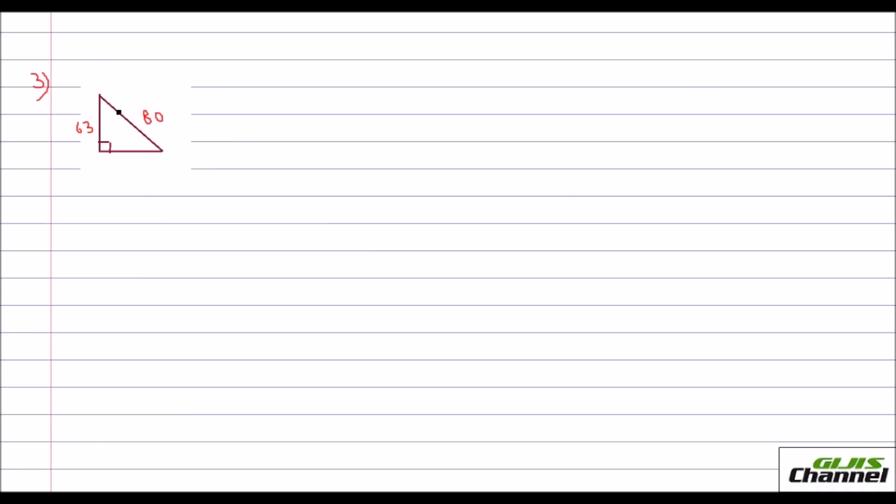You are to find out this theta. Problem involves the adjacent side and the hypotenuse side. So we go in for the CAH formula. Cos theta is equal to adjacent over hypotenuse. So that's cos theta. Because we don't know the theta. You just keep it as theta. And adjacent side is 63. We are plugging in the values. So this is 80.